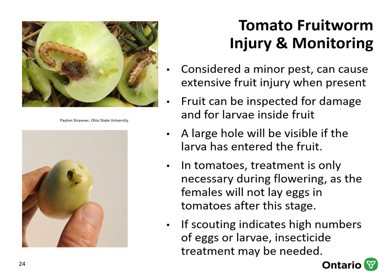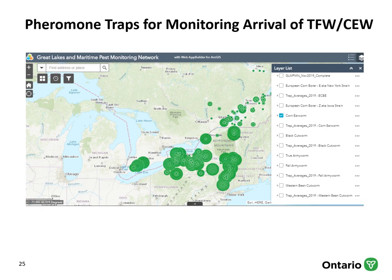Tomato fruitworm is considered a minor pest of tomatoes in Ontario, but it can cause extensive fruit injury when present. Inspect the fruit for signs of injury and for larvae feeding on the fruit — sometimes those larvae are feeding inside, so you have to open it up to see what's going on. You'll often see a hole and frass. In tomatoes, treatment is only necessary usually during flowering, as females do not lay eggs in tomatoes after this stage. If scouting indicates high numbers of eggs or larvae, an insecticide treatment may be warranted. A great resource is the Great Lakes and Maritime Pest Monitoring Network, through which trapping data for tomato fruitworm and other pests is shared and can help track population levels across regions.